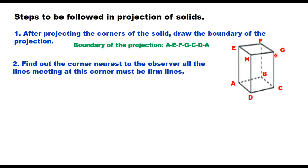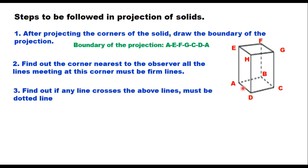The second step is to find the corner nearest to the observer. Looking from the front for elevation, the nearest corner has all its meeting lines as continuous lines — so all lines at D and H must be continuous. The third step is to find any lines that cross those continuous lines. For example, a line crossing a continuous line must be dotted, since two continuous lines cannot cross. Corner B is not visible, so edge BF crossing GH — which is a continuous line — means BF will be dotted.